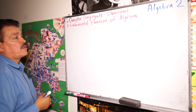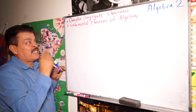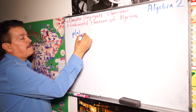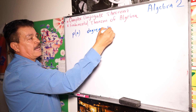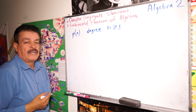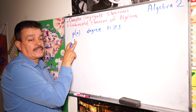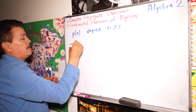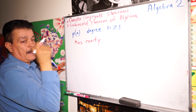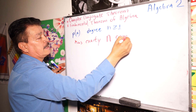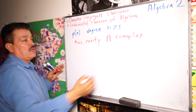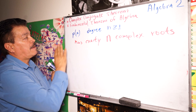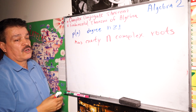Let's go to the second topic: the Fundamental Theorem of Algebra. If p(x) is a polynomial of degree n greater than or equal to 1 with complex coefficients, then p(x) has exactly n complex roots. That is the main idea of the Fundamental Theorem of Algebra.